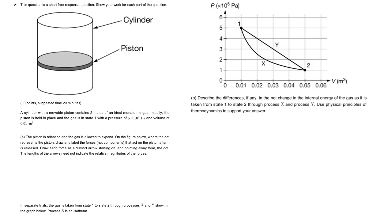This is the AP2 progress check question number two from the thermodynamics unit. This is our typical cylinder piston problem. Make sure you know these really well. I would expect to see something like this.